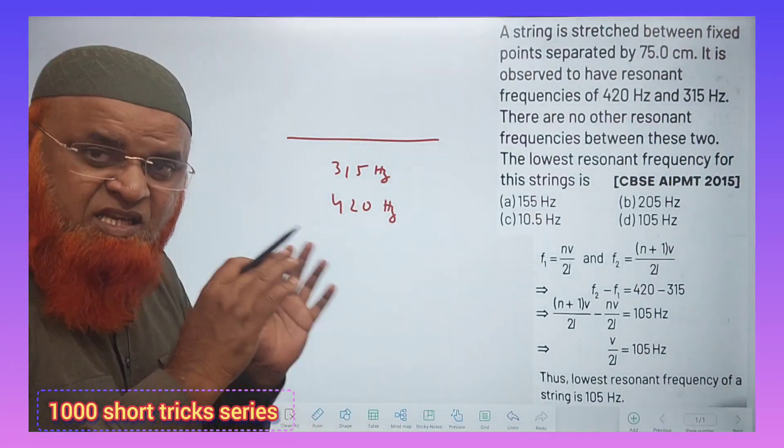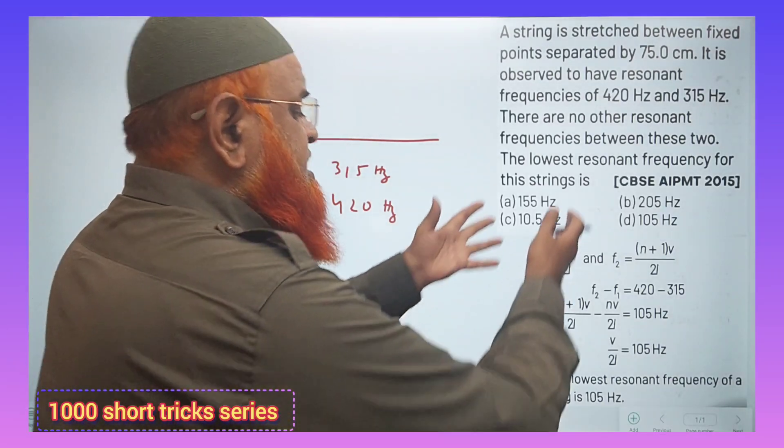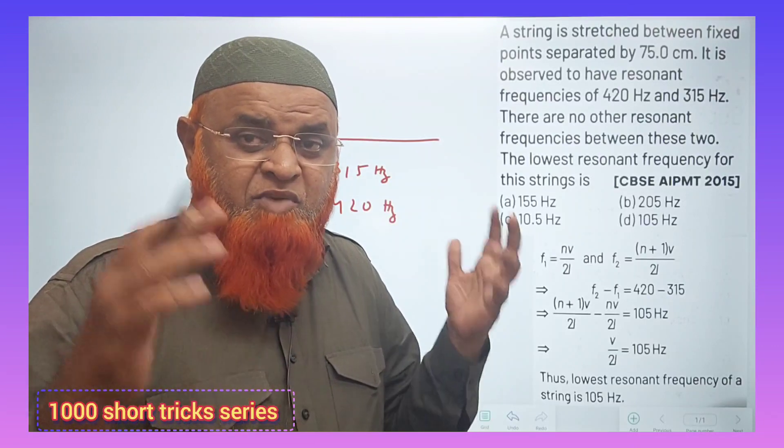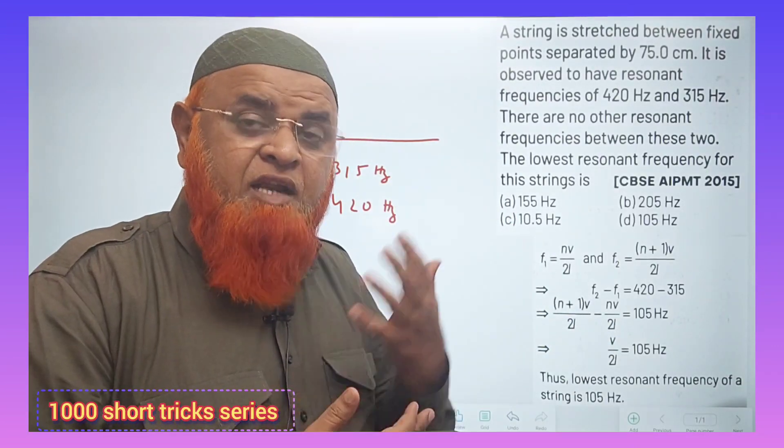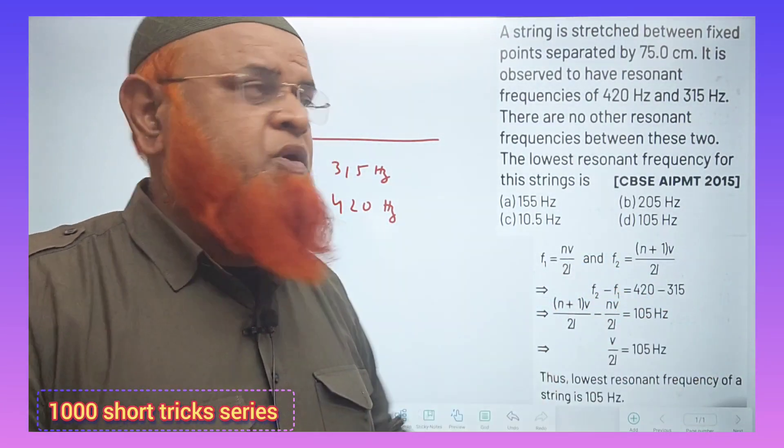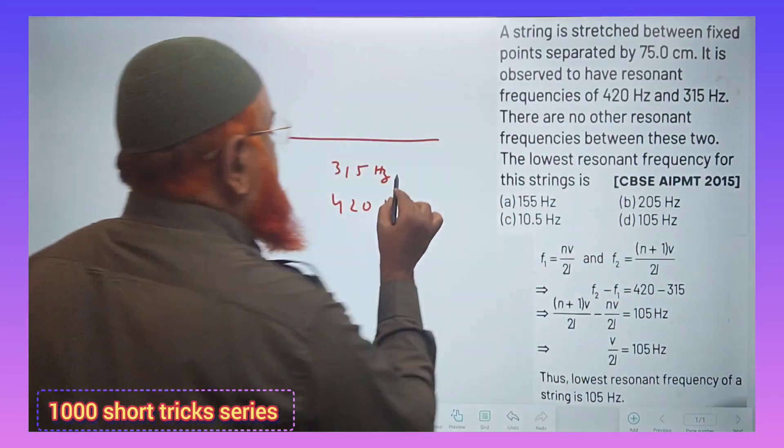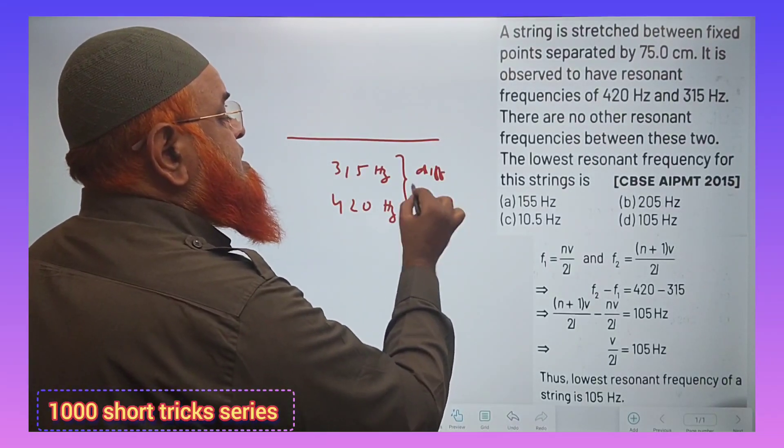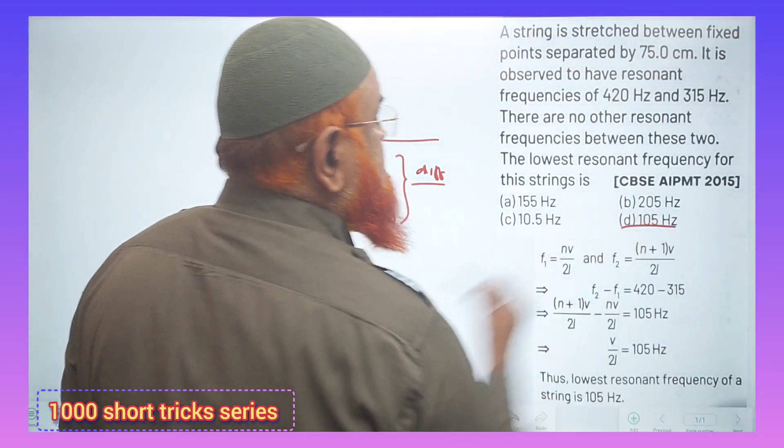You all know, in this case of a string, we can bypass all these methods and directly solve the problem. How can you solve the problem directly? Basically, first I will tell you, after that I will tell you the reason behind that also. Instead of doing all this stuff, what you can do is: these two are the frequencies. If you find the difference between them, the answer is ready.